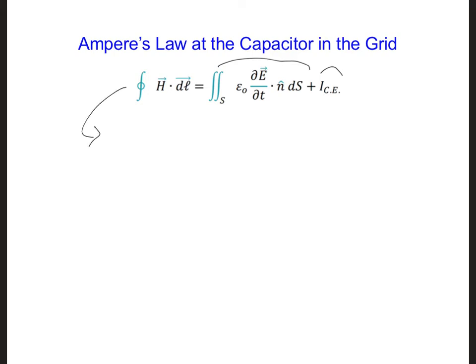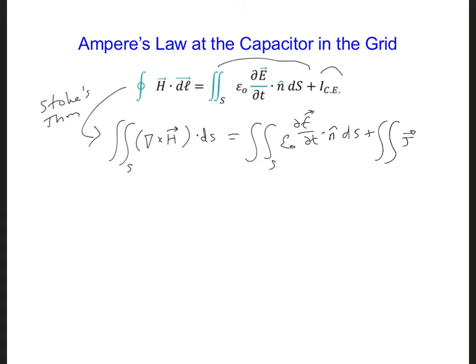To convert to pointwise form, we're going to use Stokes theorem. And so that will allow us to rewrite this line integral as a surface integral of curl of H dS. And now we have the surface integral of the displacement current dot n hat dS. And now I'm going to rewrite the circuit element current as the current density of that circuit element flowing through that surface S. Now all the terms have a surface integral. And so we can equate what is inside of each of those surface integrals. So I can have the curl of H is equal to epsilon naught dE dt plus J_CE. So now we have the pointwise form of Ampere's law.